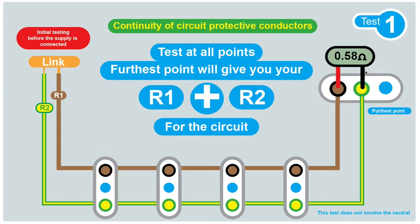The purpose of the test is to verify that the CPC is continuous from the fuse board to every point on the circuit, all the way to the furthest point, and is correctly terminated at each point on the circuit. We do the test by linking out the line and the CPC, R1 plus R2, and we test at each point with our low ohms tester. At the furthest point the reading we take, we record as our R1 plus R2, and we record that on our installation certificate.